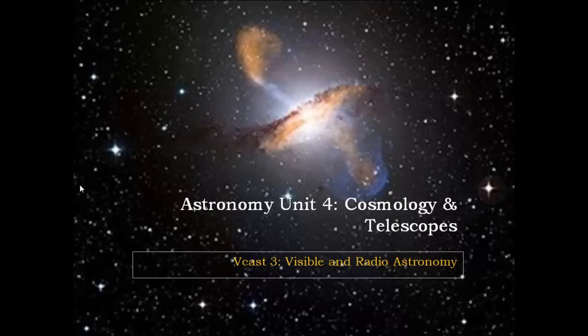This is the third vodcast for cosmology and telescopes, this is unit 4, and this one's specifically going to look at a little bit left over from telescopes and also two types of astronomy that we can do. When we look at the electromagnetic spectrum, you can divide it up from radio all the way into gamma, and each branch of that electromagnetic spectrum studies its own parts of the universe. So we're going to look at the visible and the radio stuff today.